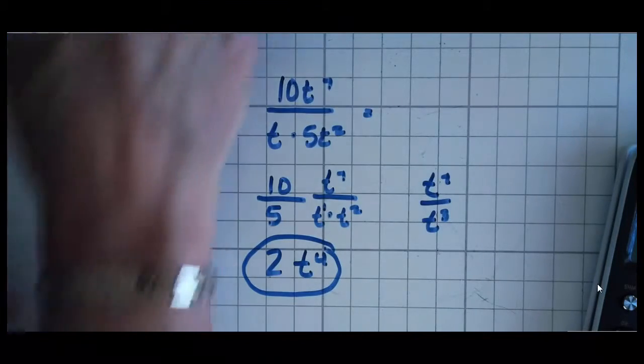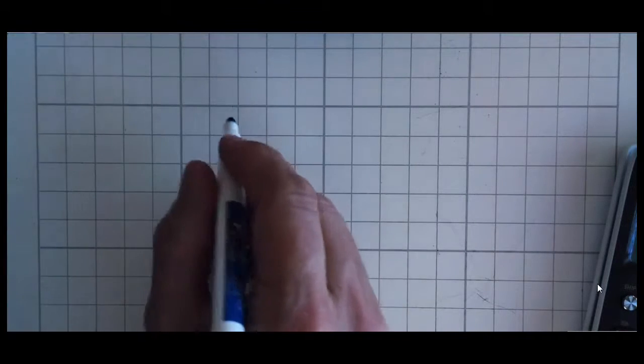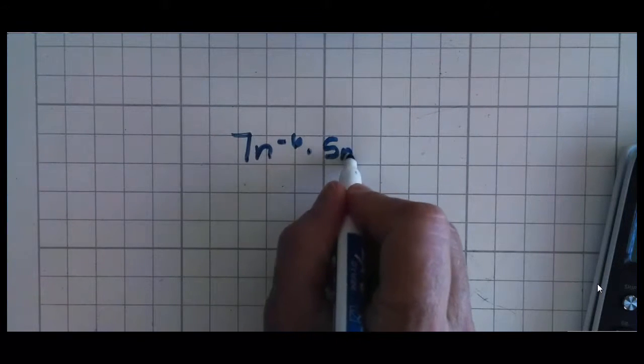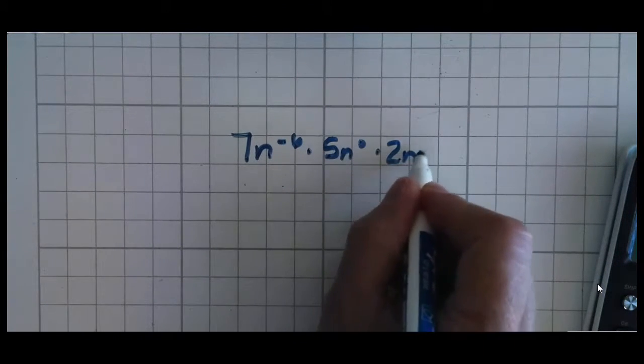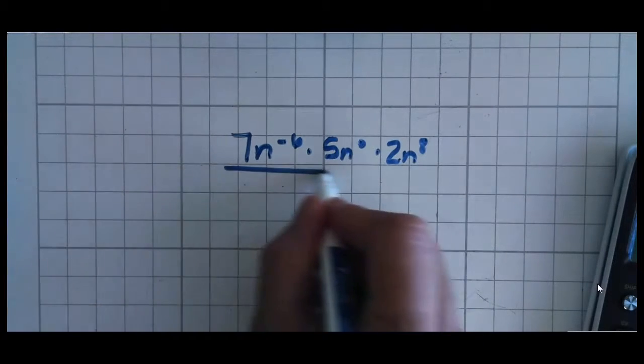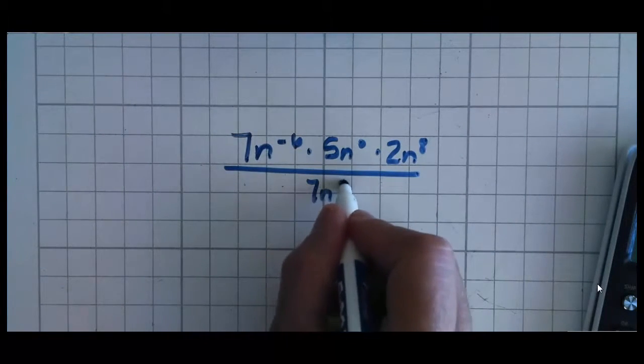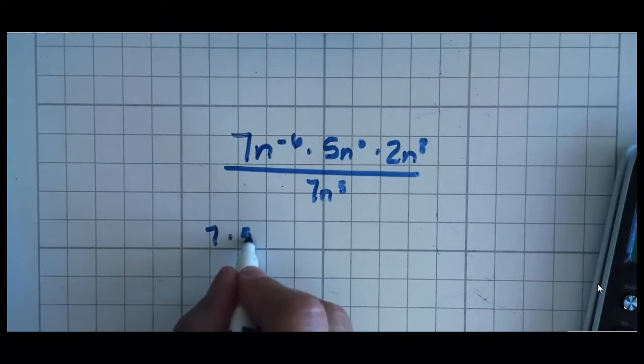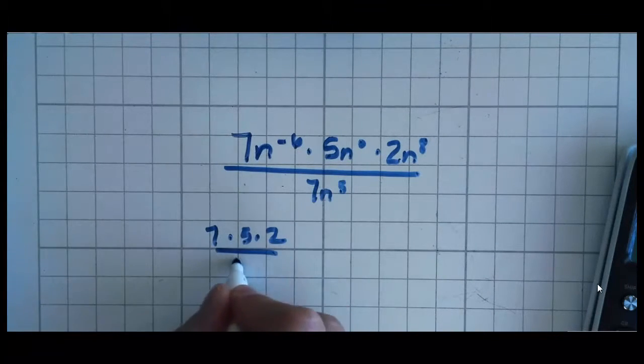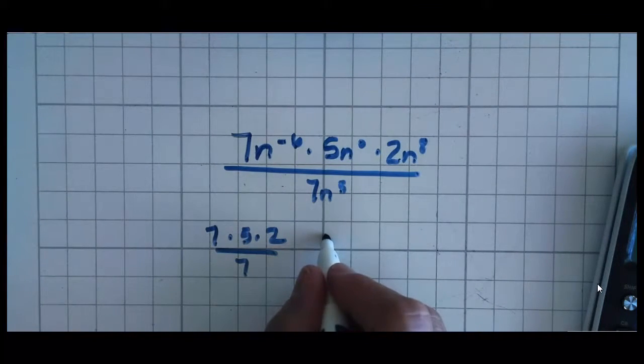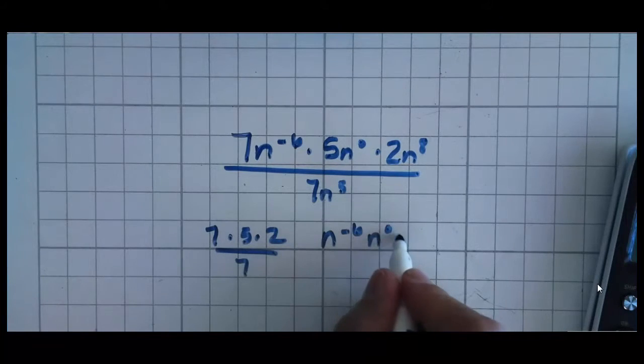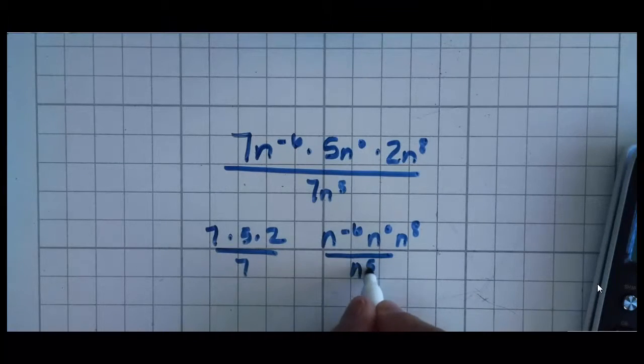Let's do another one. Actually, I think I want to do two more. Let's do two more. I want to make sure you really know what you're doing. 7n to the negative 6th times 5n to the 0 times 2n to the 8th. And all of that is over 7n to the 5th. Now let's pull our numbers out. 7 times 5 times 2. And that's all over 7. Our exponents, our variables, n to the negative 6th, n to the 0, n to the 8th, and n to the 5th in the bottom.